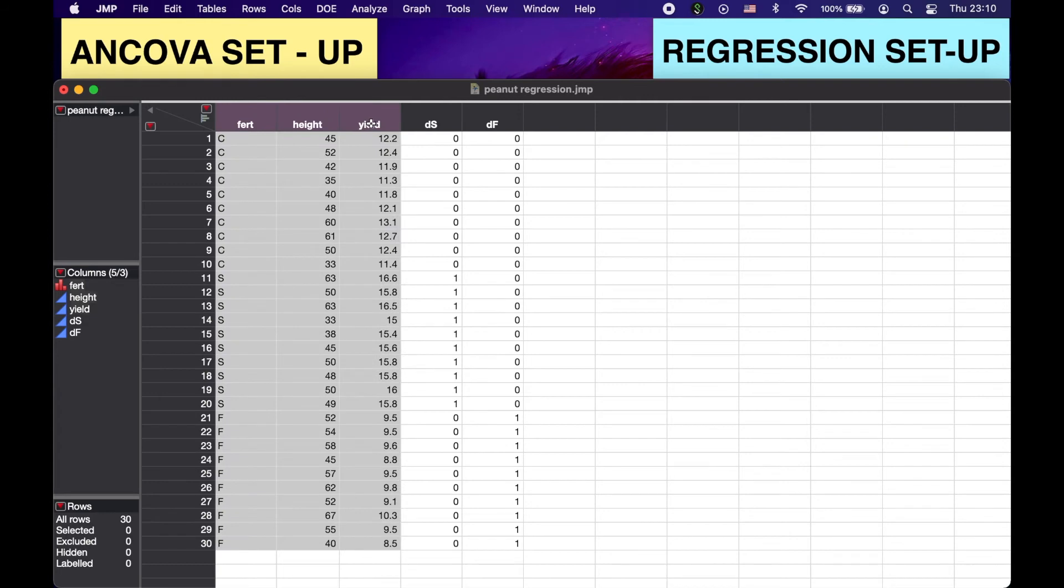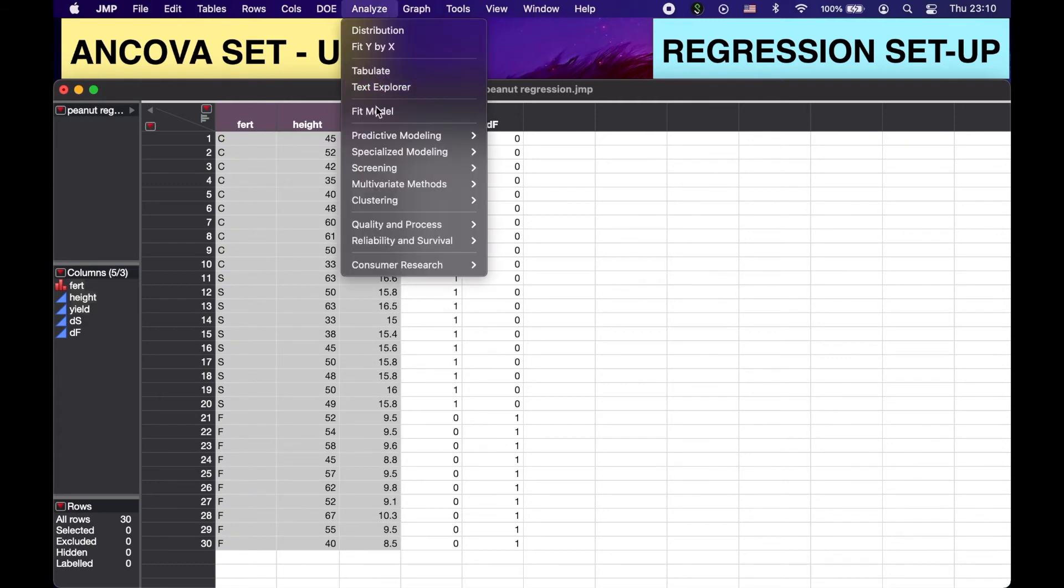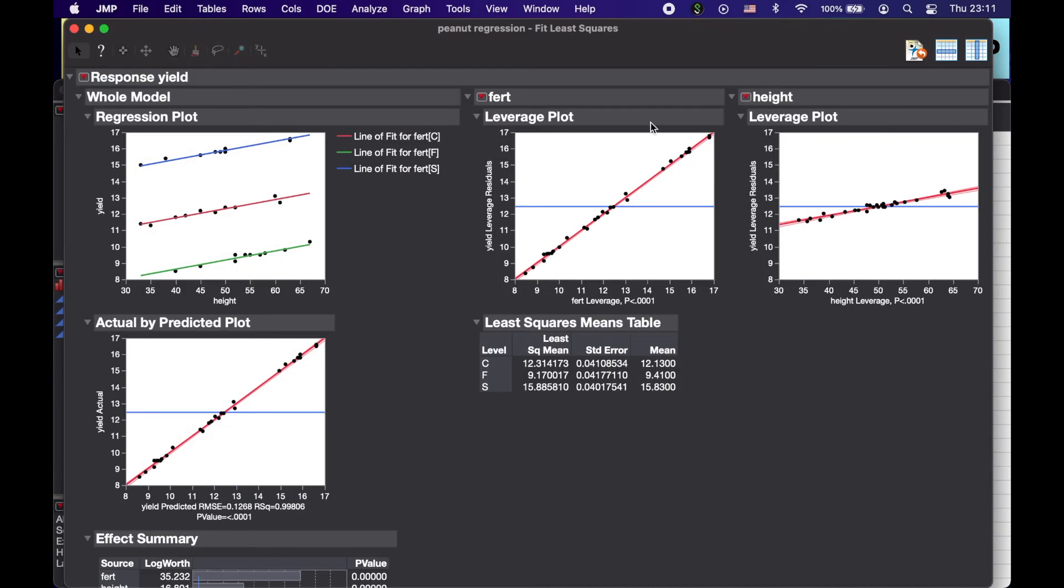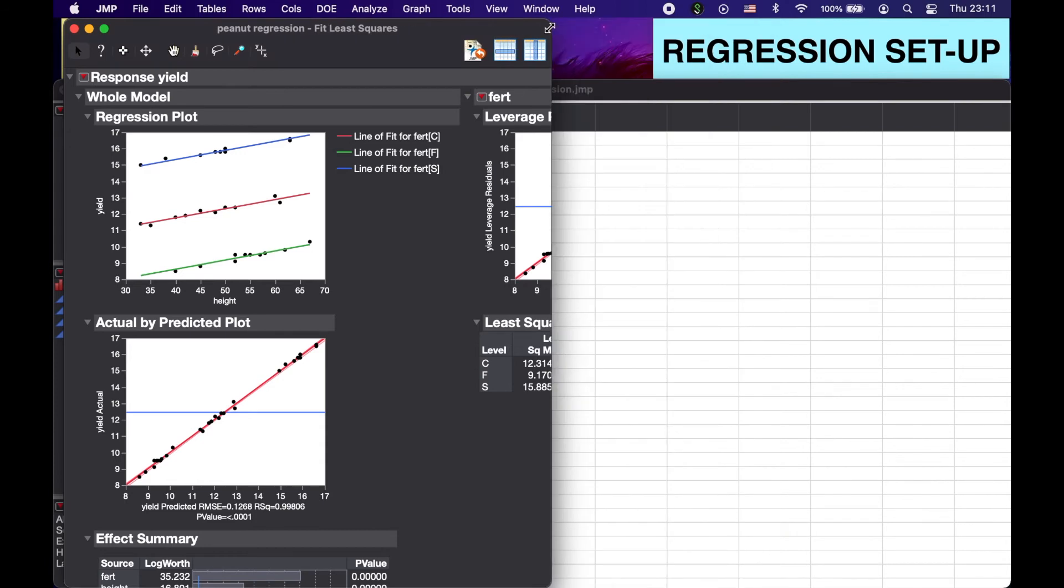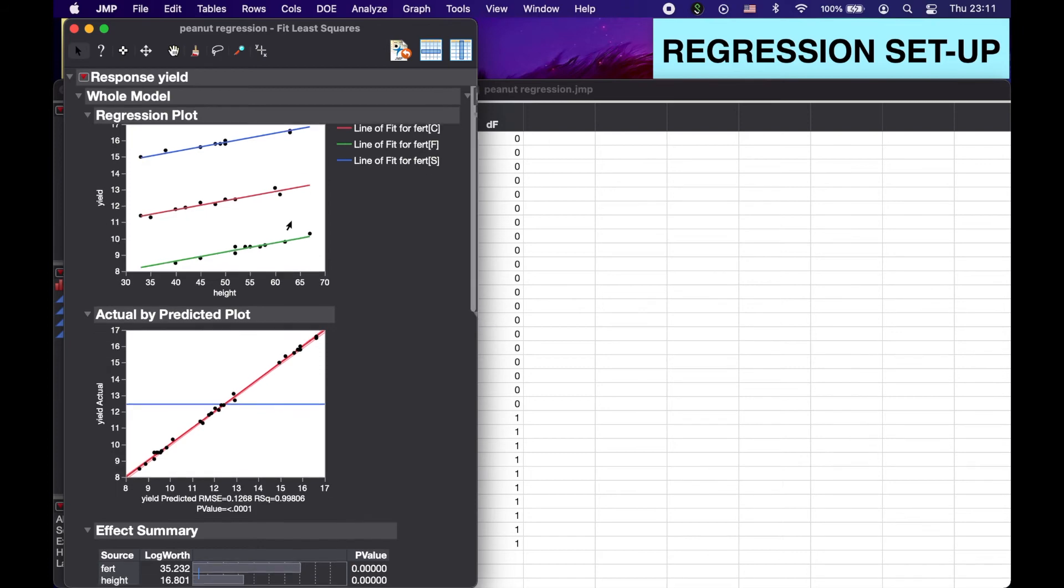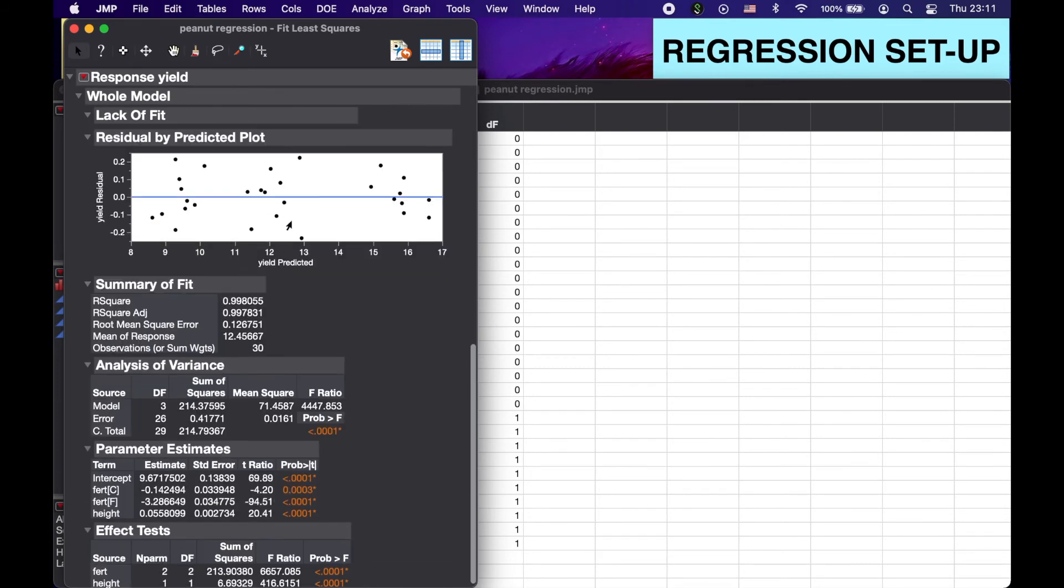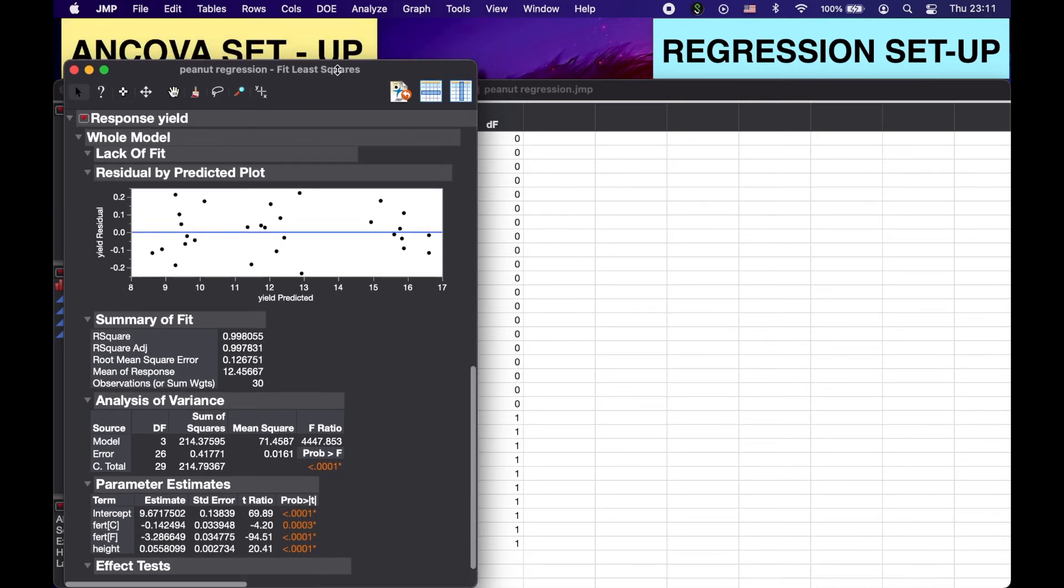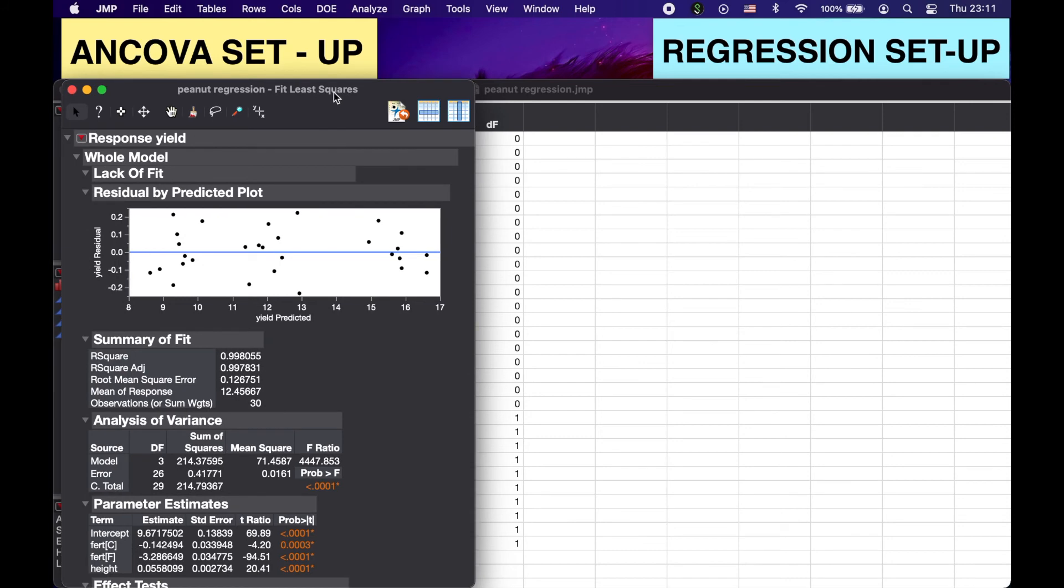So how I'm going to break it up is we're going to first set up our analysis using the ANCOVA. So what I'll be using is these three columns. So we're going to analyze, fit model, yield, our height, and our fertilizer. We're going to add that and run. And so I'll go through that slowly for our videos. This is the plot that we got at the end of lesson 18c. But if we scroll down, we have our ANOVA table, our parameter estimates, and our effect. But really this isn't beneficial until we bring up our other analyses. So we'll leave this on this side.